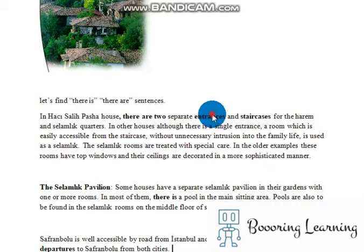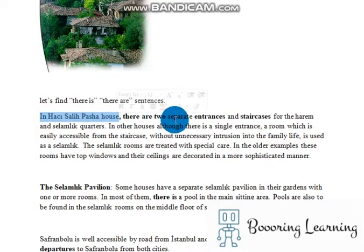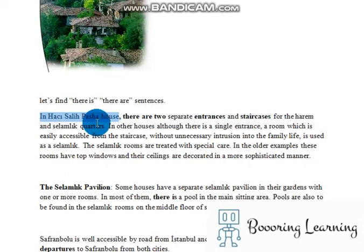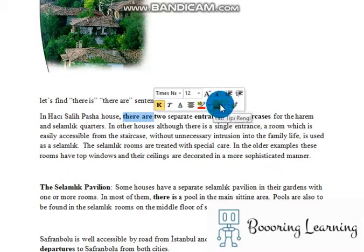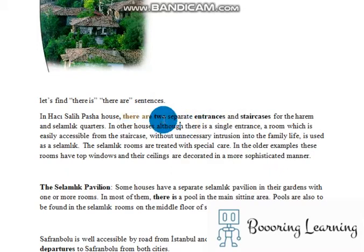Let's find sentences which include there is and there are. In Haci Salih Pasha House, there are two separate entrances and staircases for the harem and salon quarters. As you see, we used there are here, and the rest of the sentence is plural.